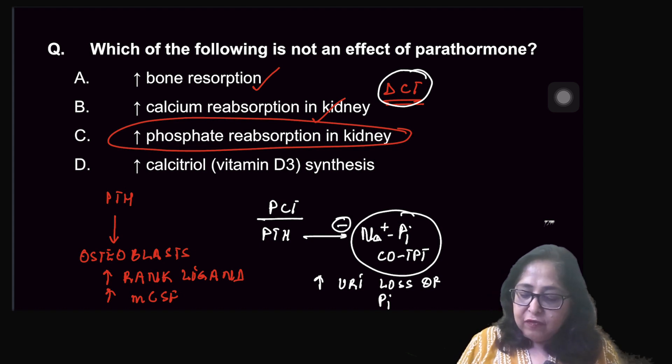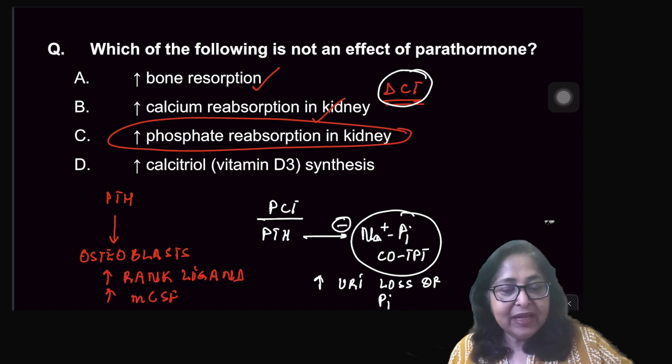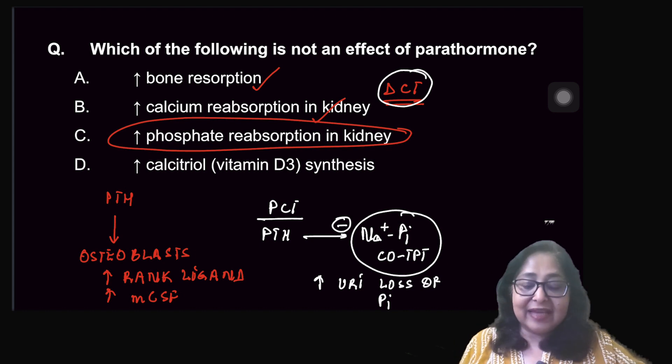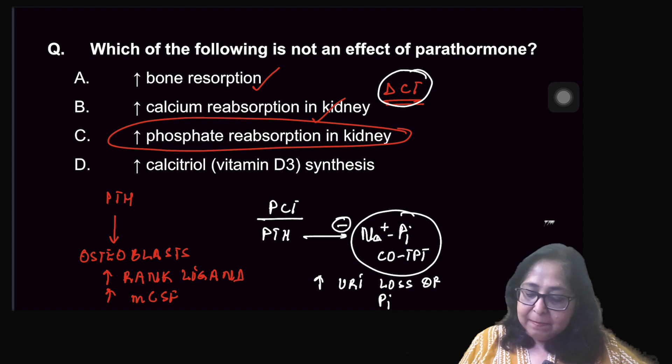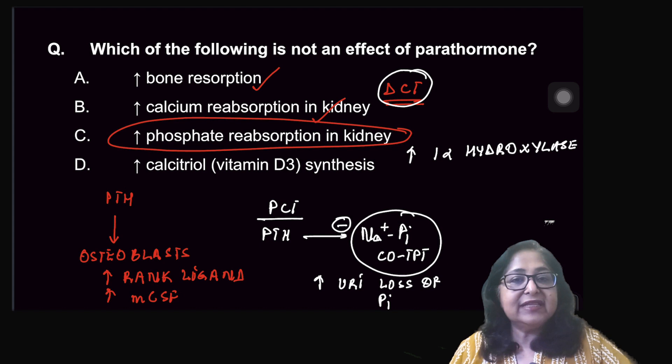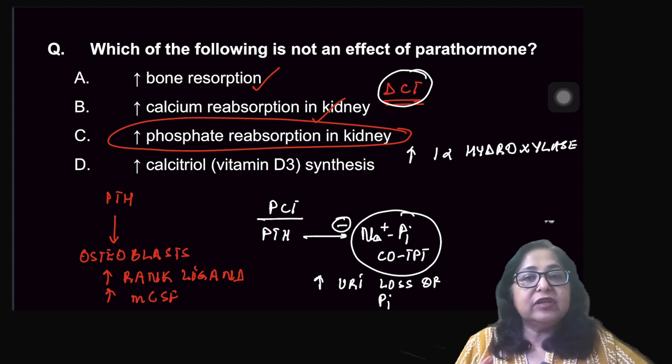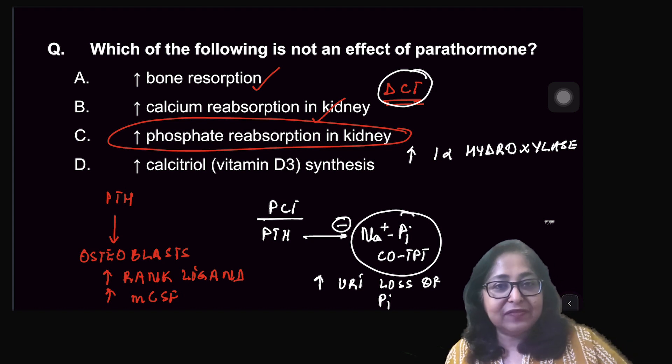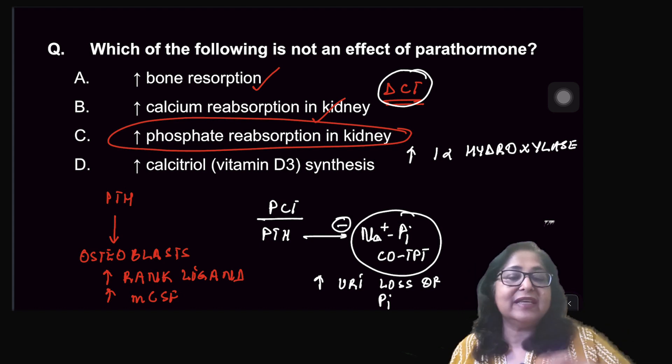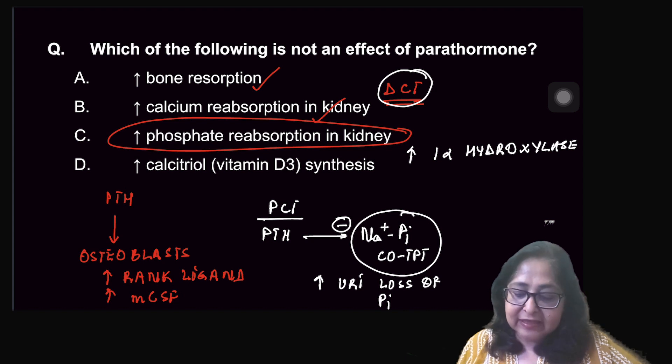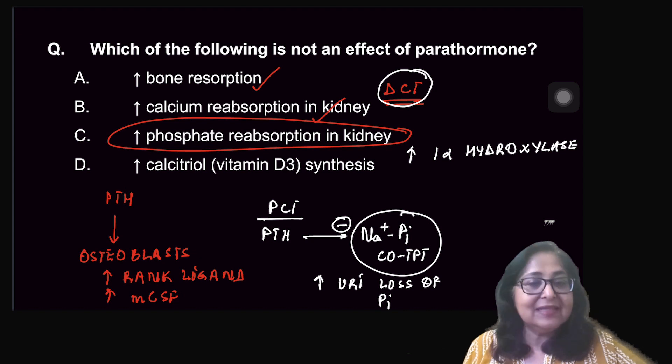What is the effect of parathormone on calcitriol? Parathormone increases the calcitriol synthesis. Parathormone will increase the activity of 1-alpha-hydroxylase enzyme in the kidney. 1-alpha-hydroxylase is responsible for the conversion of 25-hydroxycholecalciferol to 1,25-dihydroxycholecalciferol which is the active form of vitamin D. So it increases calcitriol synthesis. Answer here is C.